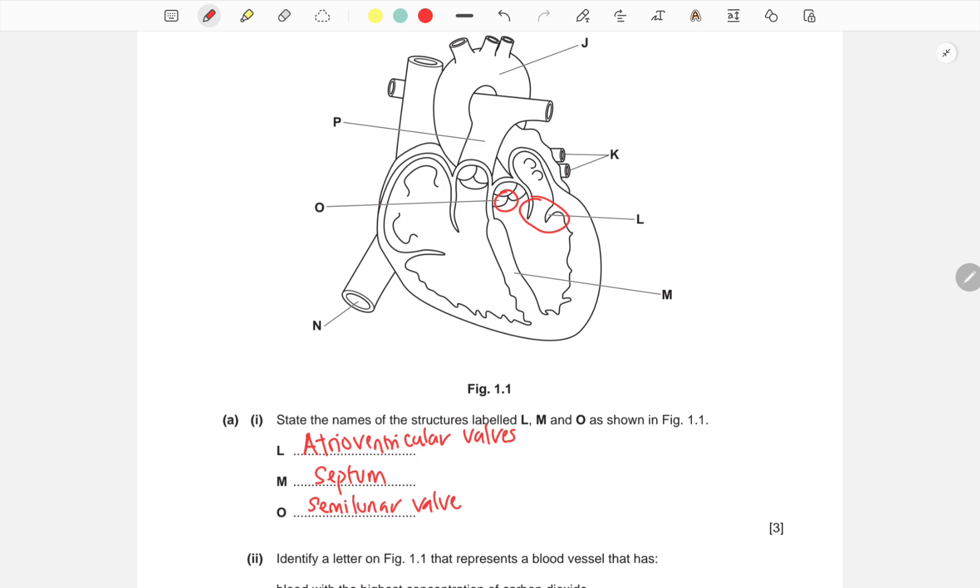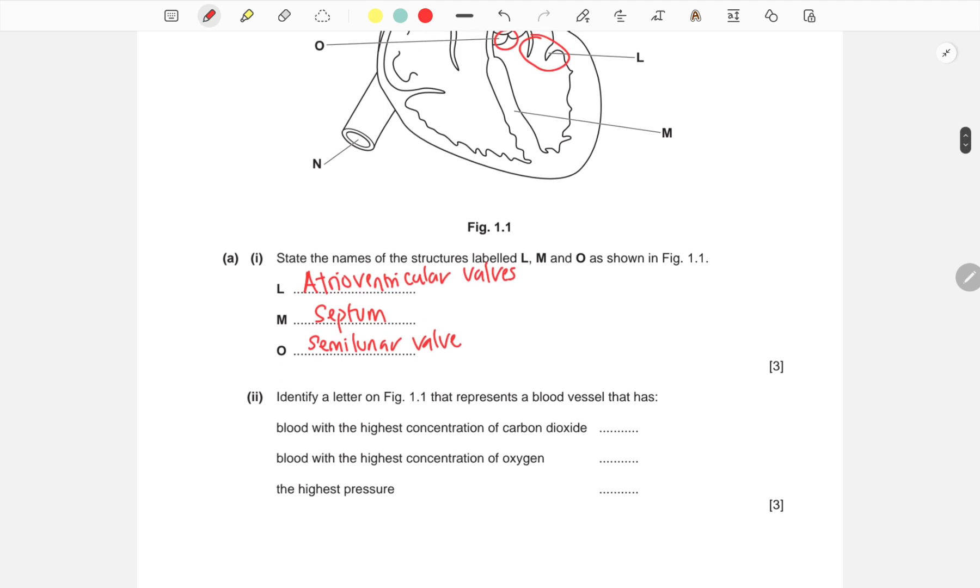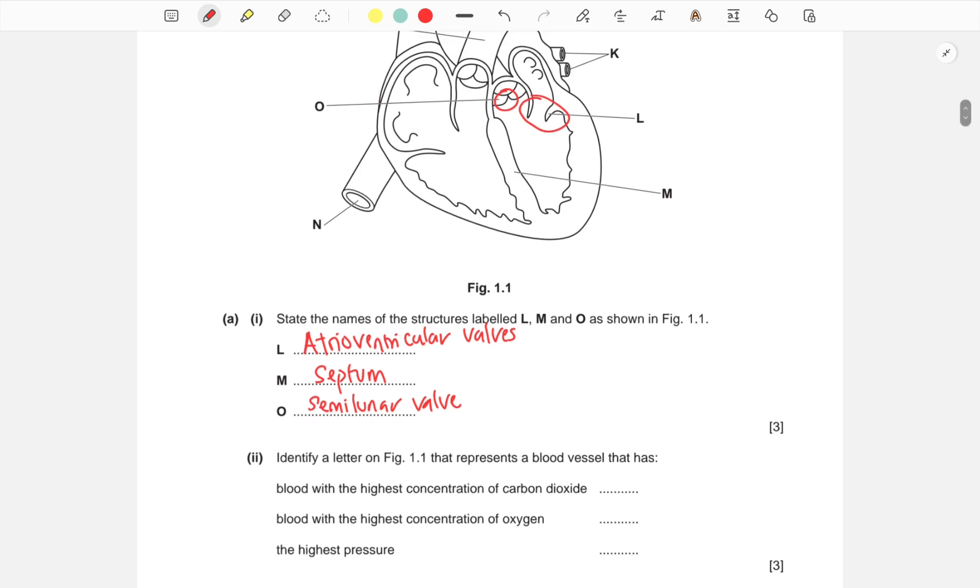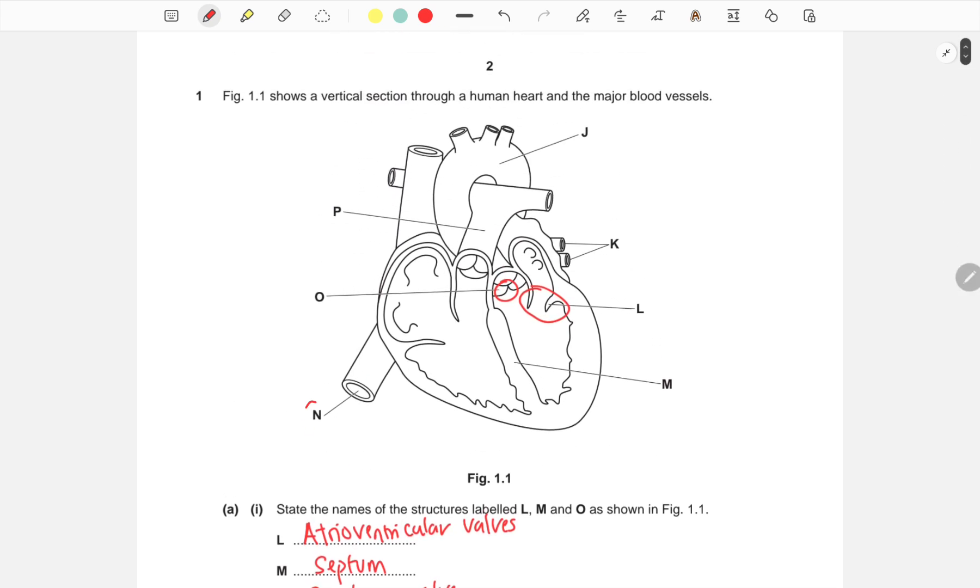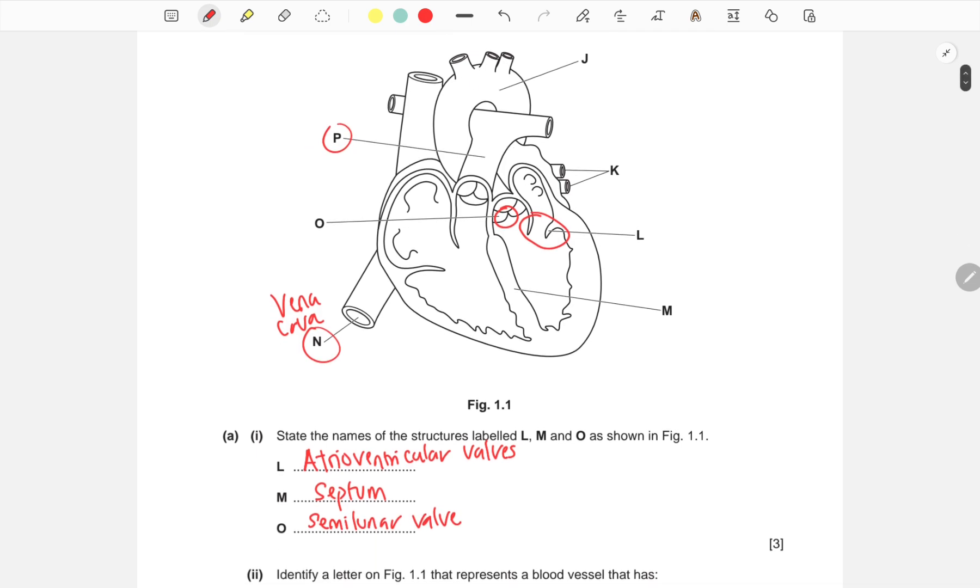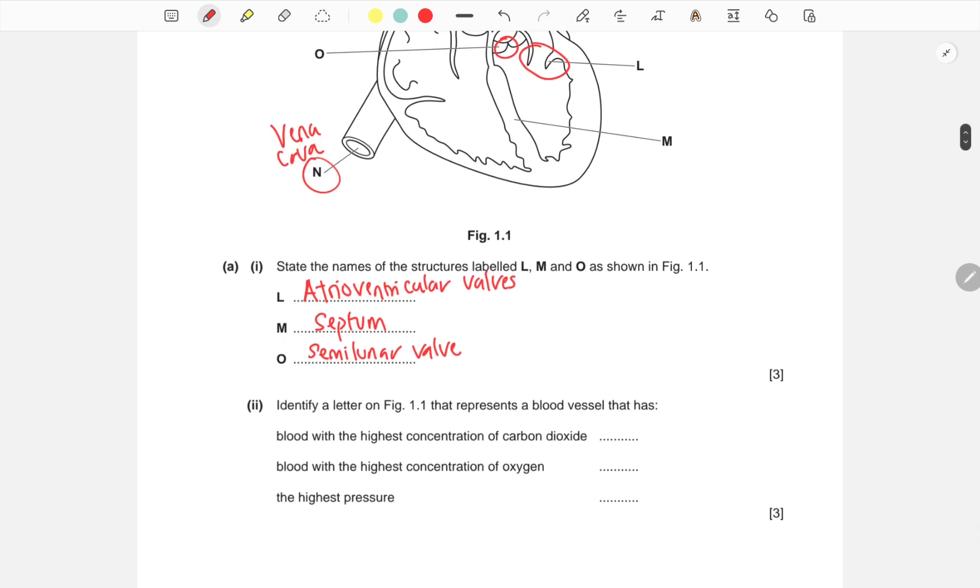The blood with the highest concentration of carbon dioxide will be in either the vena cava or the pulmonary artery. The vena cava in the diagram is N, or the inferior vena cava. The pulmonary artery is structure P. Either will be the correct answer. You can put either N or P, but just one letter, because it says 'a letter'.